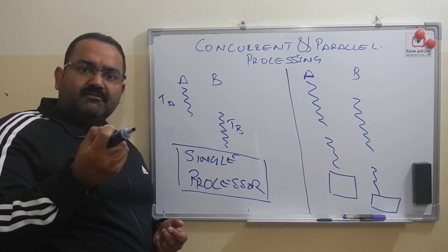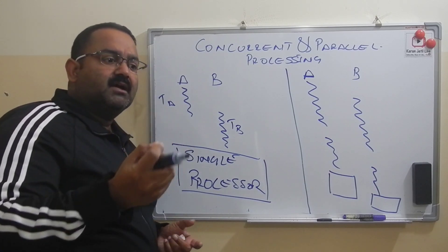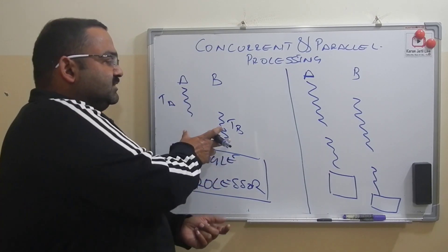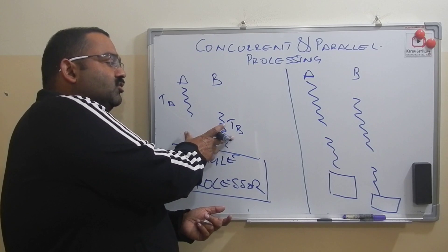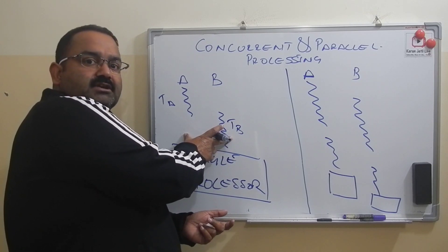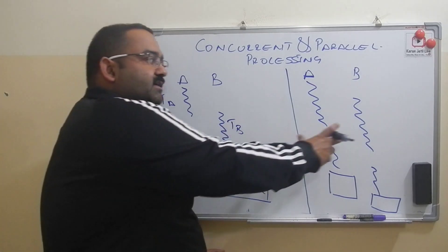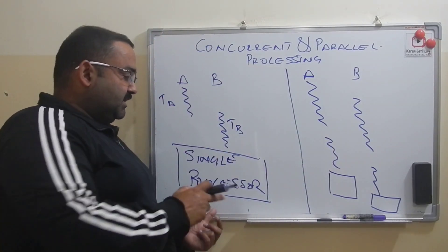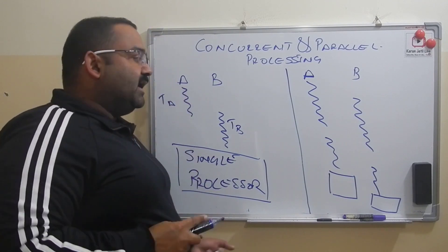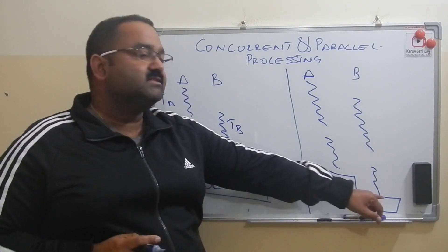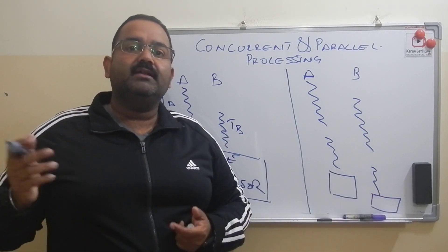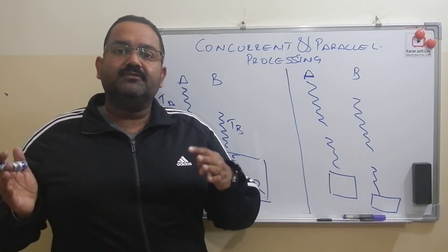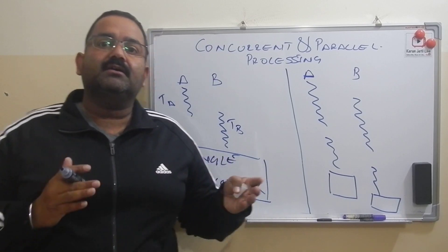So what is the similarity? The similarity is that threads almost run at the same time in both cases. The difference is that in concurrent processing the processor is one, and in parallel processing the processor is more than one. That is the difference between concurrent and parallel processing.